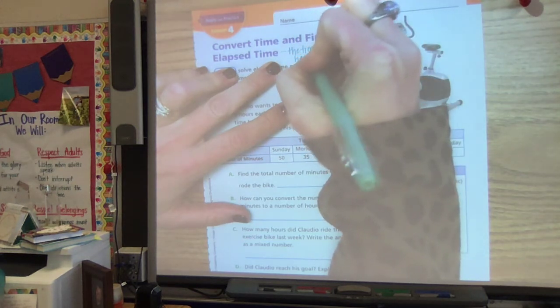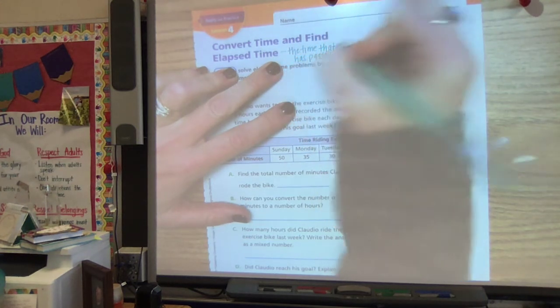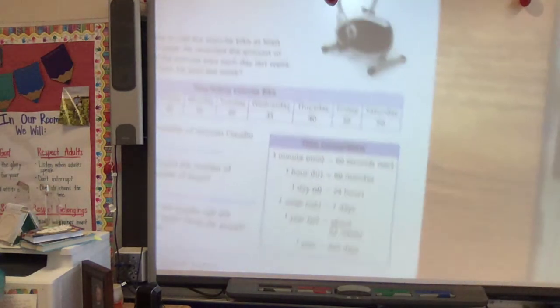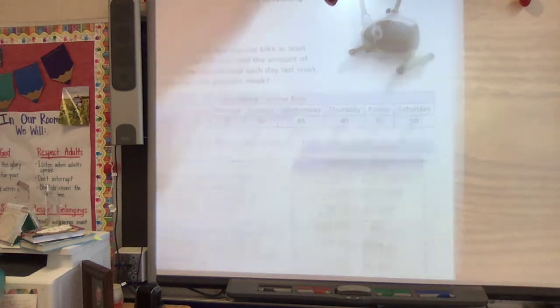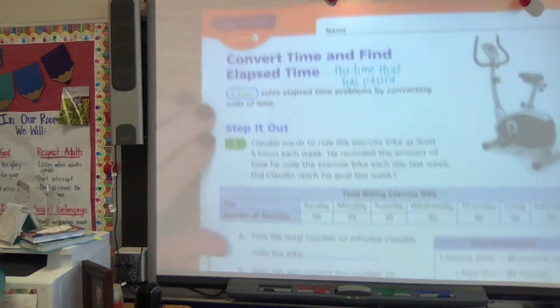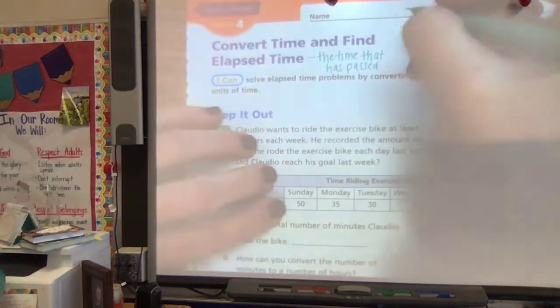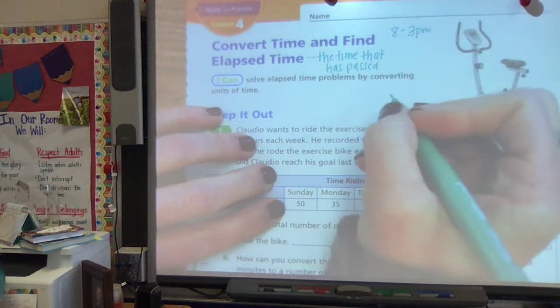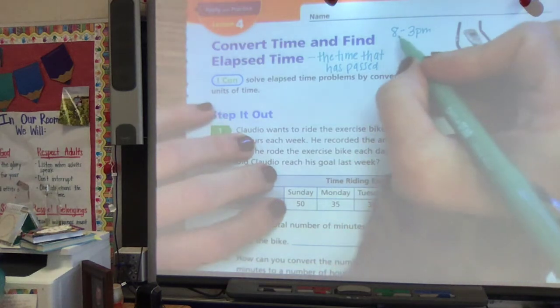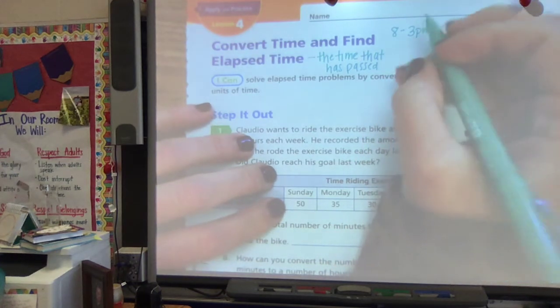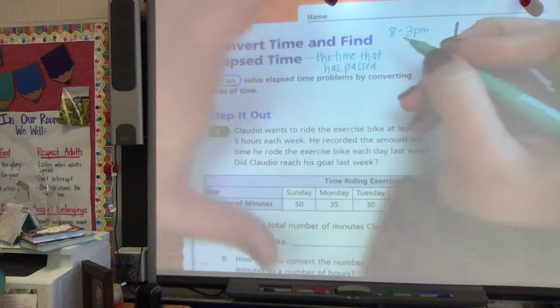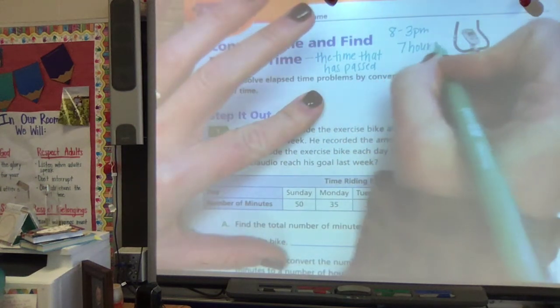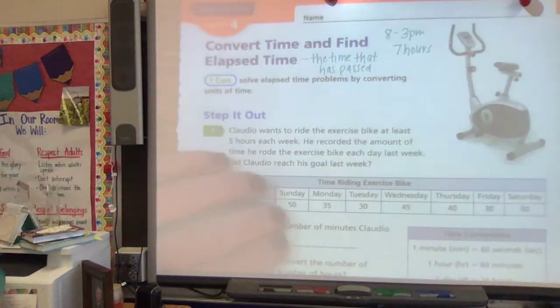For example, if you were at school from 8 a.m. to 3 p.m., the amount of elapsed time is how much time is it from 8 to 3? So you're at 8, 9, 10, 11, 12, 1, 2, 3. So you've been there for 7 hours. So that's your elapsed time.